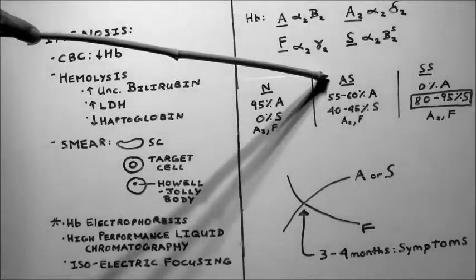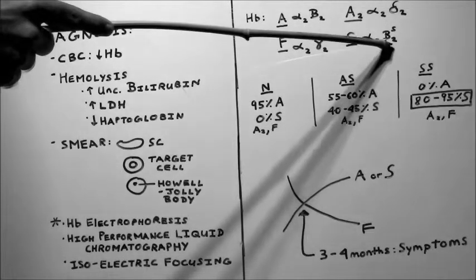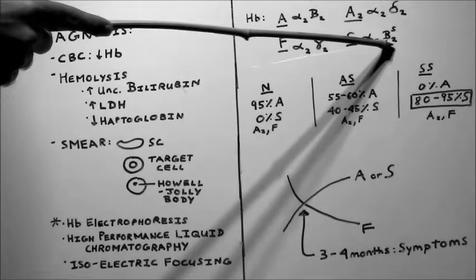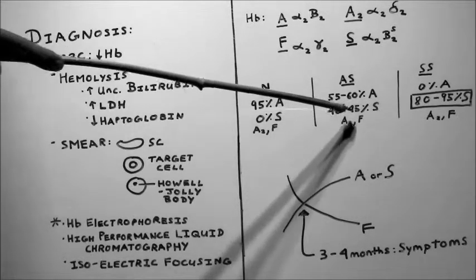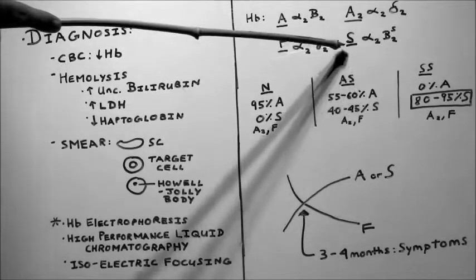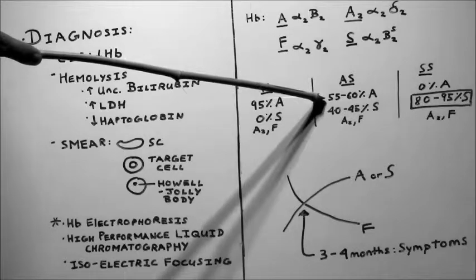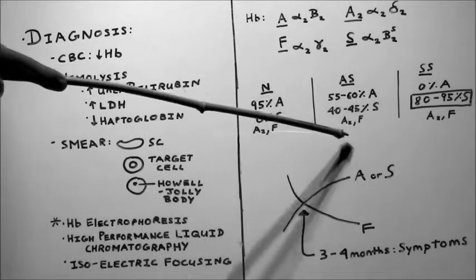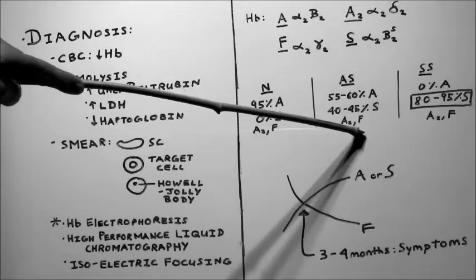Now a person with sickle cell trait does have some of the mutated beta chains. So they have 40% to 45% hemoglobin S and 55% to 60% hemoglobin A. And they also have a little bit of A2 and F.